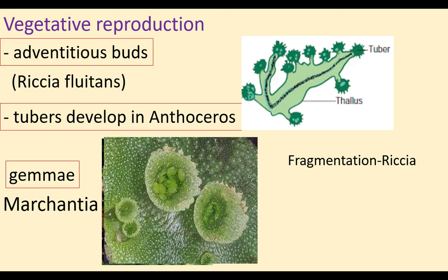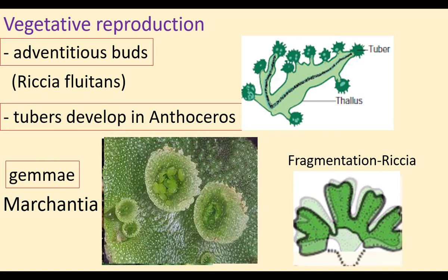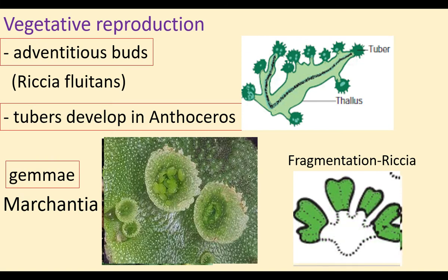Fragmentation is seen in Riccia. The central part of the thallus undergoes disintegration, so the branches are separated into fragments that develop into separate thalli. The types of vegetative reproduction in bryophytes are: adventitious buds, tubers, gemmae, and fragmentation.